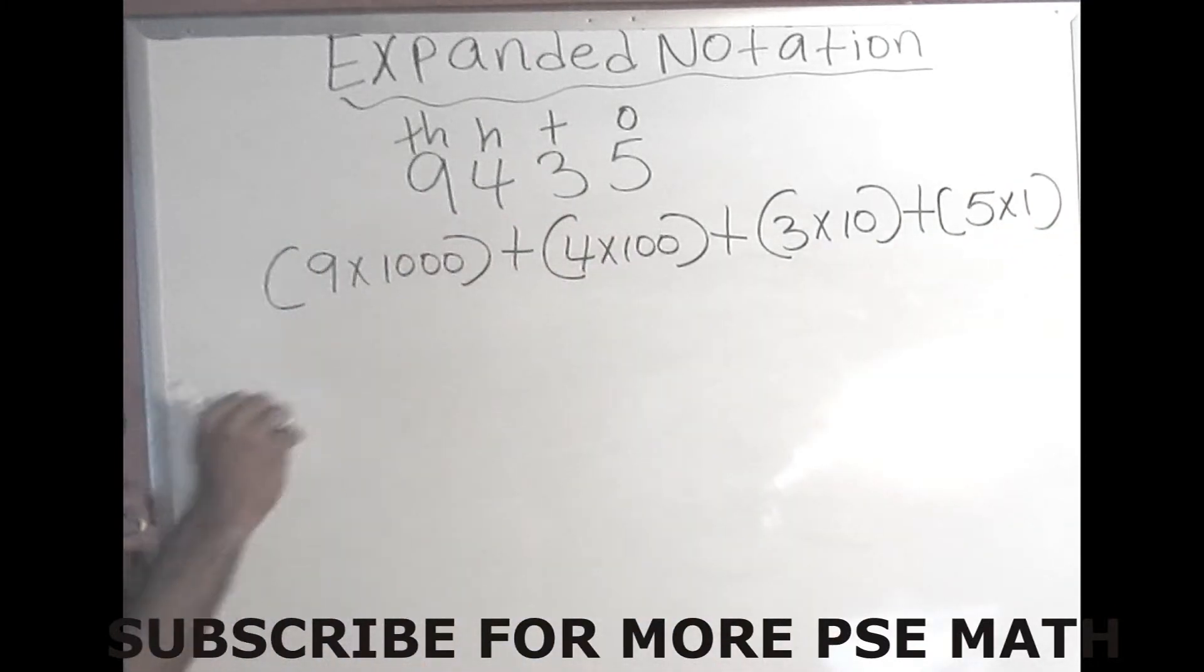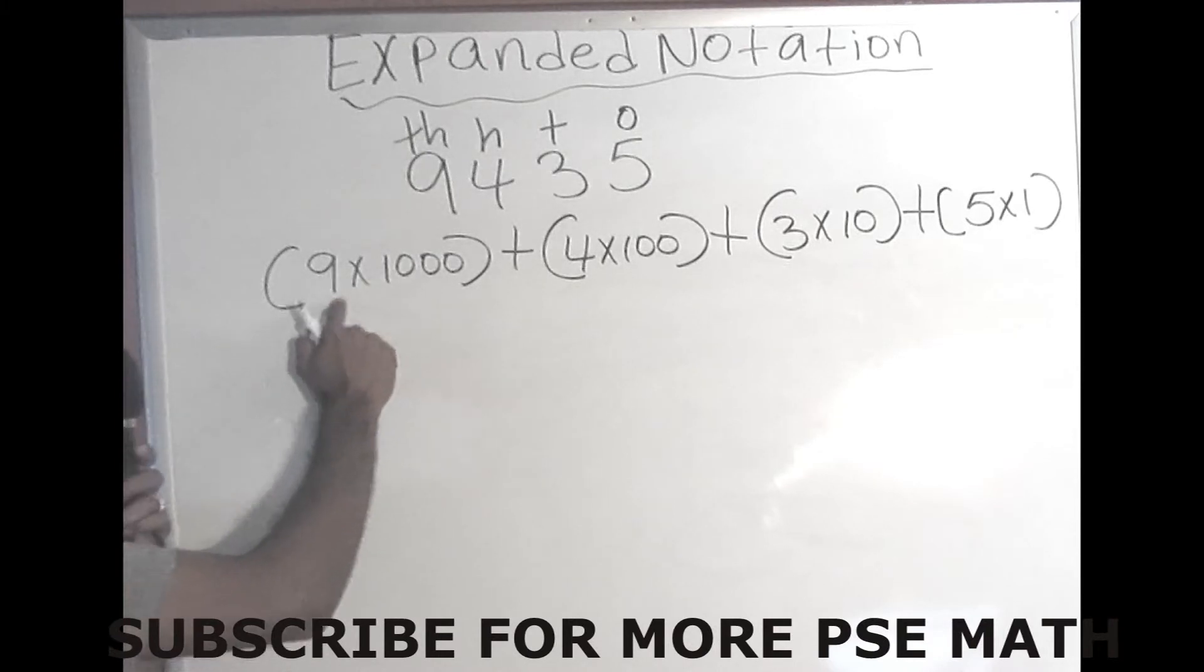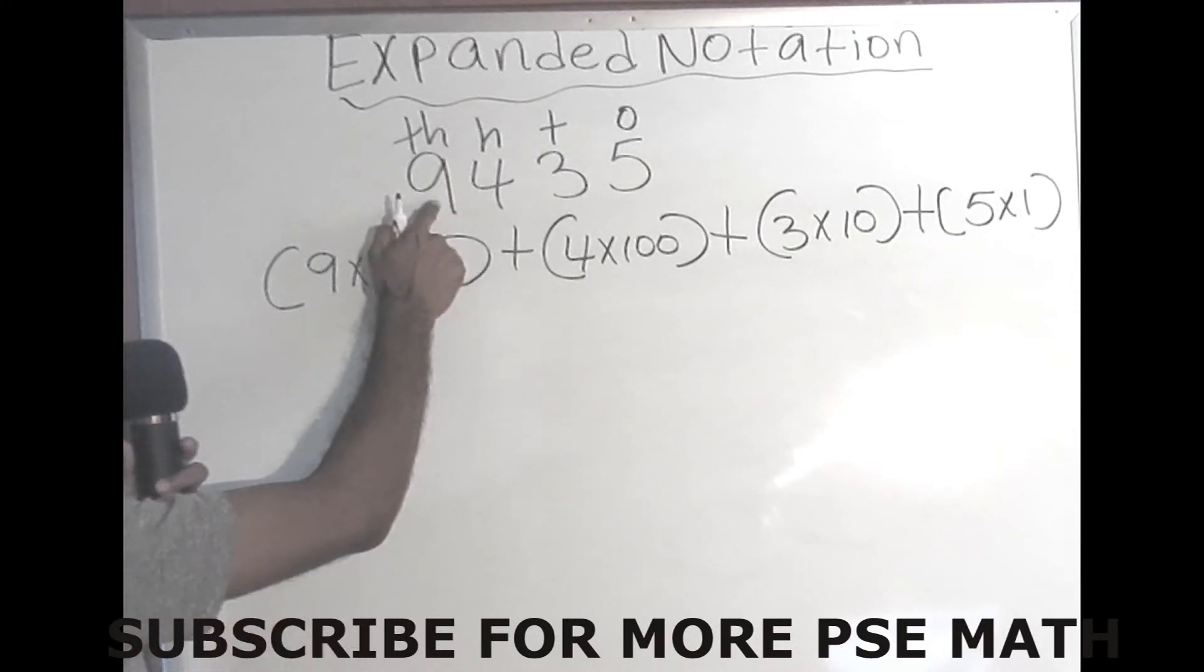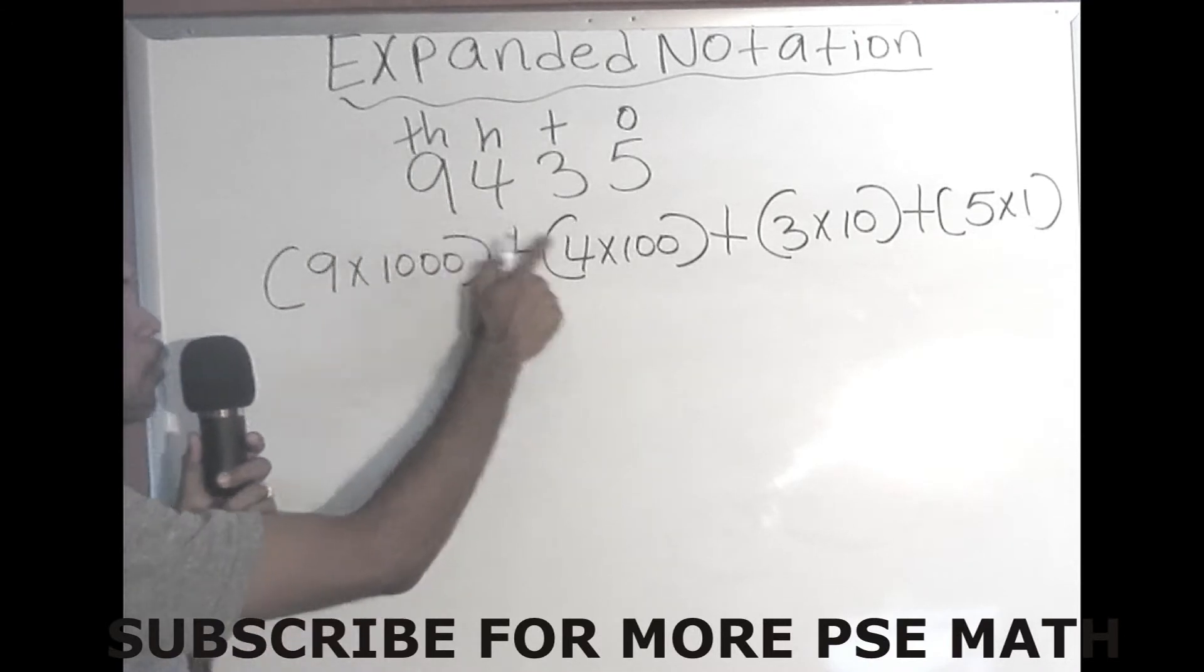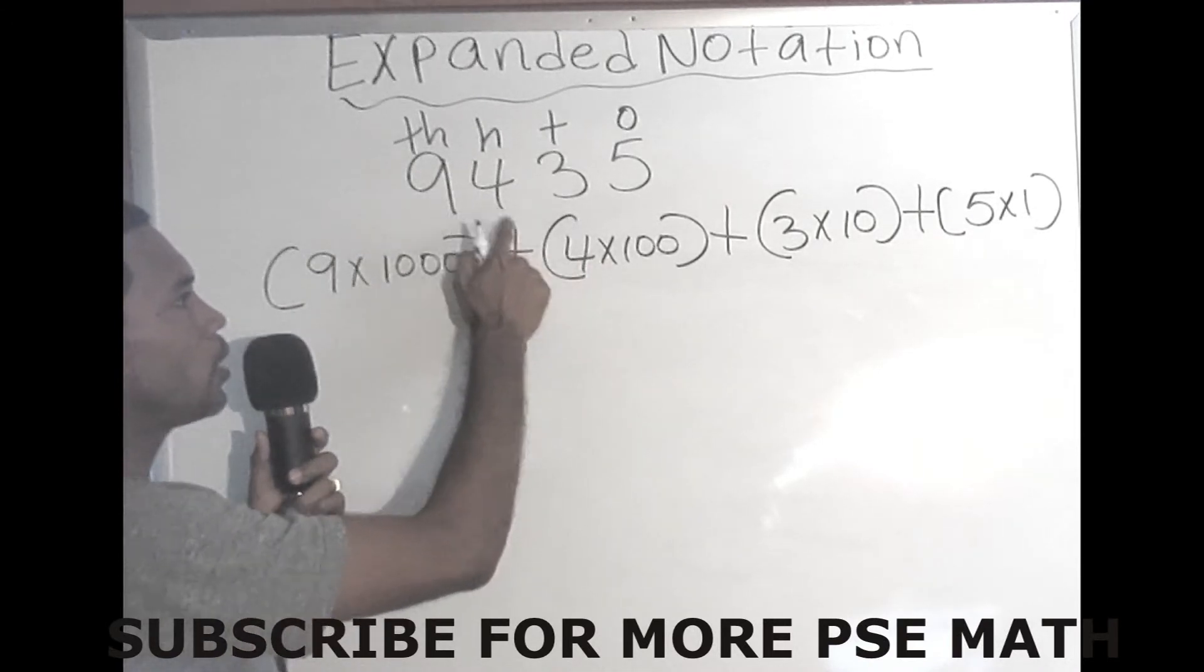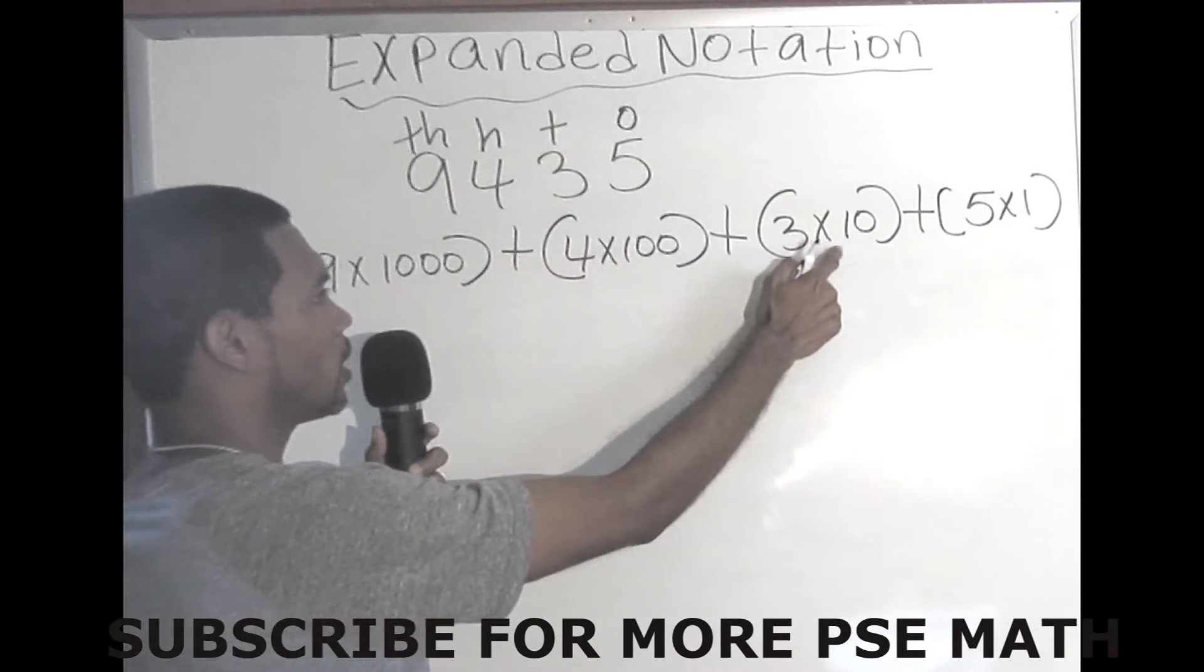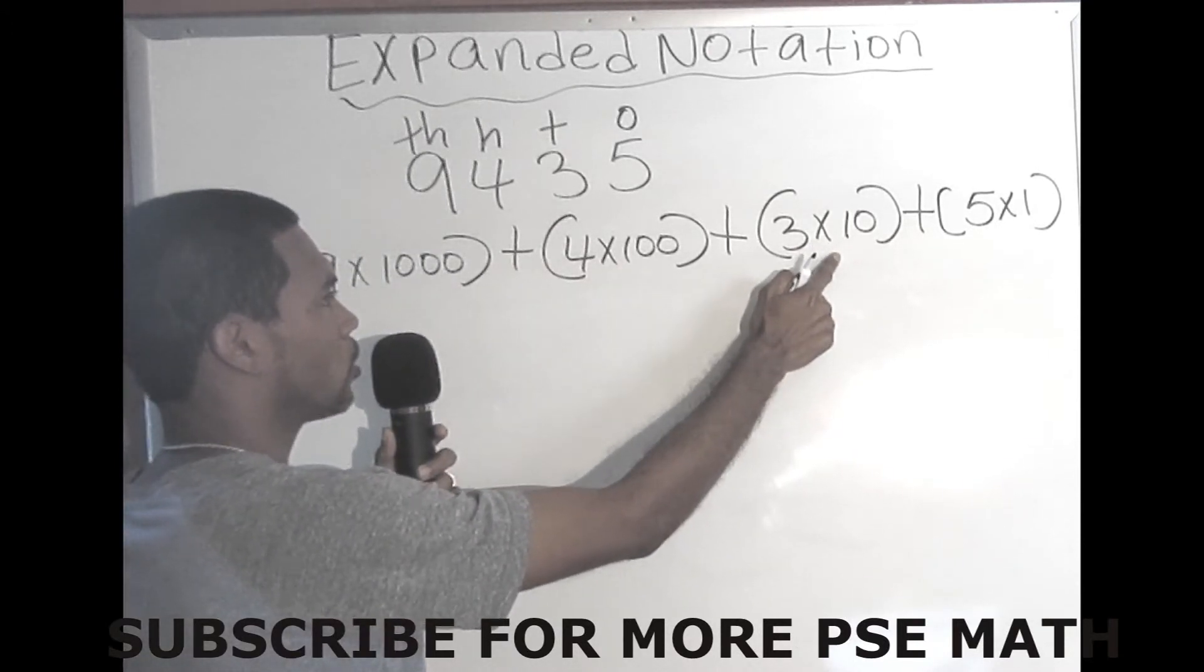So if you see, this is the first way you will expand this number. Again, the 9 is in the 1000s place, so it's 9 times 1000, which is 9,000, plus. 4 is in the 100s place, which is 4 times 100, which is 400. The 3 is in the 10s place, 3 times 10, which will give us 30.